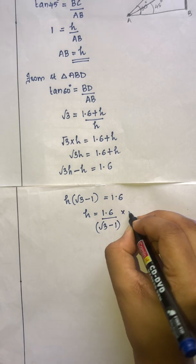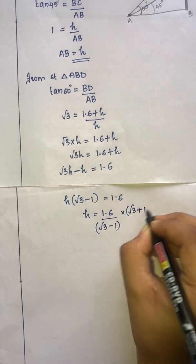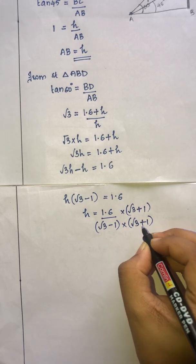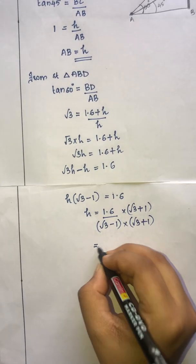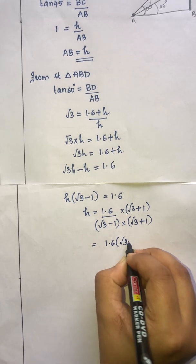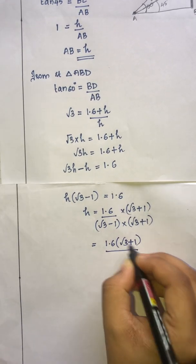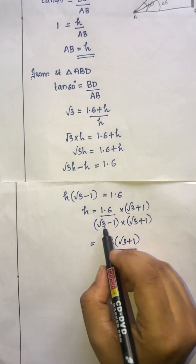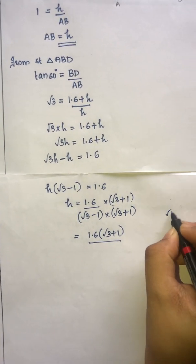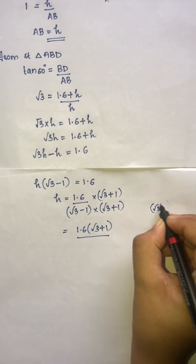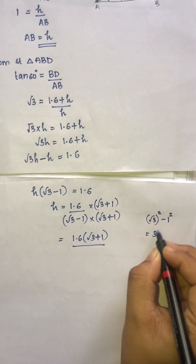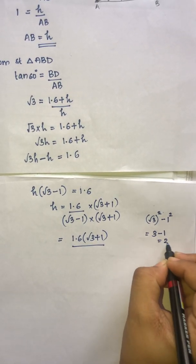To rationalize, multiply the numerator and denominator by root 3 plus 1. So h equals 1.6 times (root 3 plus 1) divided by (root 3 minus 1)(root 3 plus 1). This is of the form A plus B times A minus B, giving A squared minus B squared, which is root 3 squared minus 1 squared, equal to 3 minus 1, which is 2.